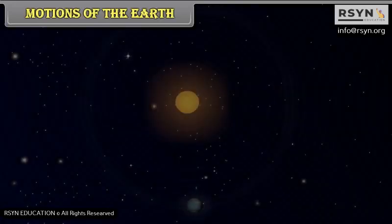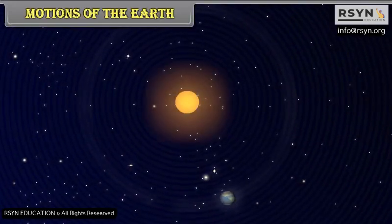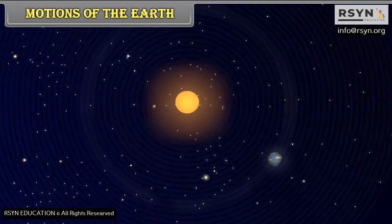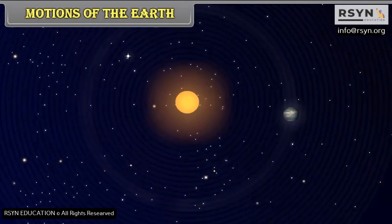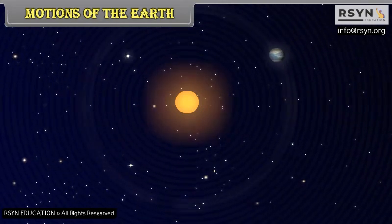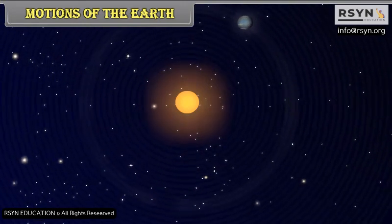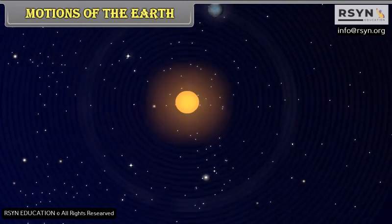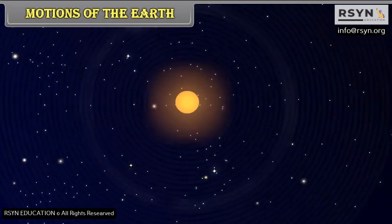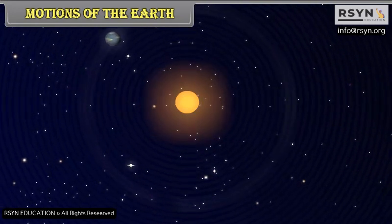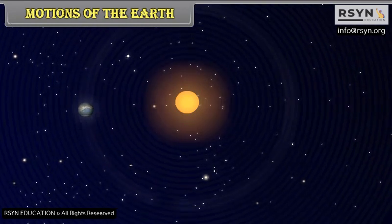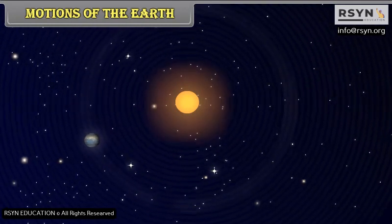Motions of the Earth. It seems as if the sun rises in the morning from the eastern horizon, goes overhead, and then in the evening sets in the western horizon. In fact, this is not so. It is not the sun but the earth that moves. The sun is in the center and the earth goes around the sun. The earth has two important movements: rotation and revolution.